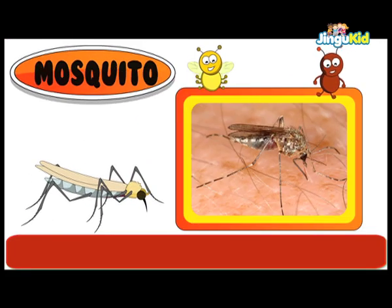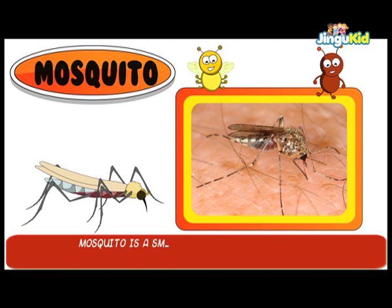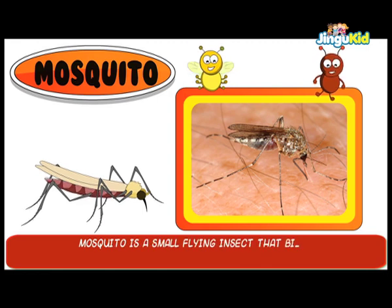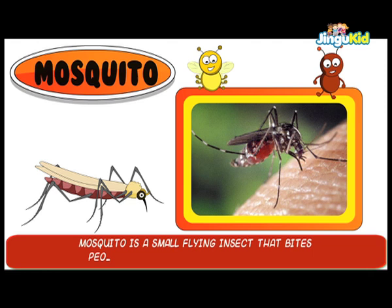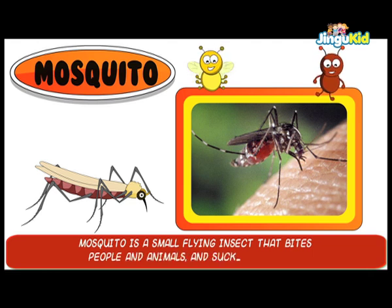Mosquito is a small flying insect that bites people and animals and sucks their blood.